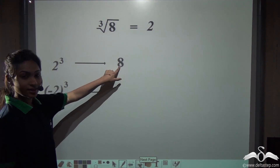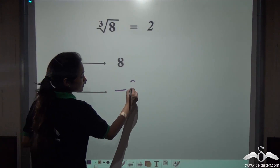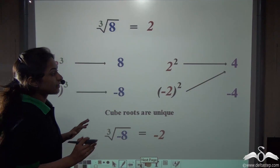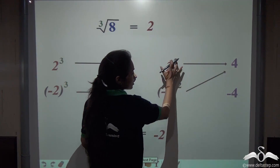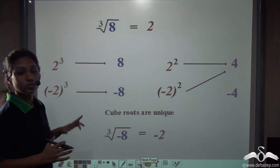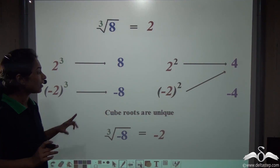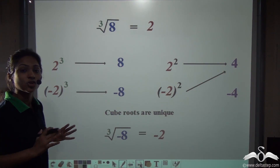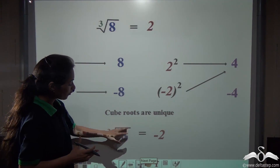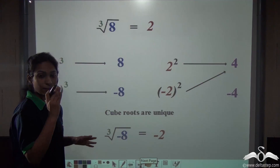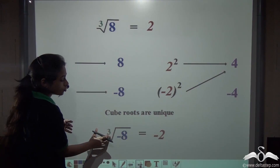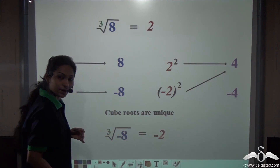2 cubed gives us 8, but minus 2 cubed gives us minus 8. So a square number can have a square root as positive or negative, but a cube root is always unique — it will not have both a positive and negative number as a cube root. So cube root of minus 8 gives us minus 2, since minus 2 multiplied with itself 3 times gives minus 8.